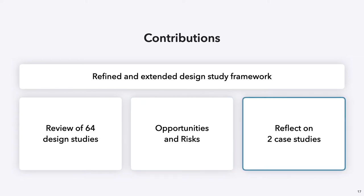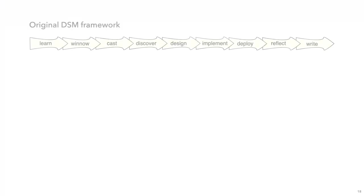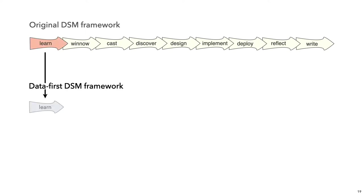We also reflect on two previously published studies that guided our initial thinking. I will compare our data-first framework to the original nine-stage DSM framework. The learn stage remains unchanged — it is about visualization knowledge in general and independent of the specific domain problem. A major change is to add an early acquire stage at the beginning. A visualizer encounters, collects, generates, or obtains access to a dataset, and begins to develop a data abstraction.